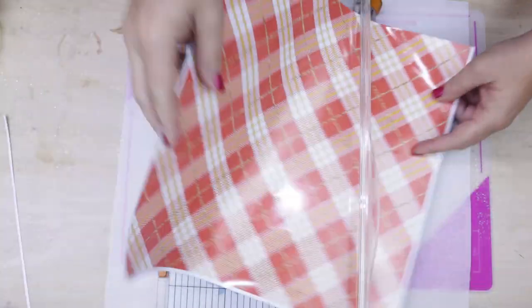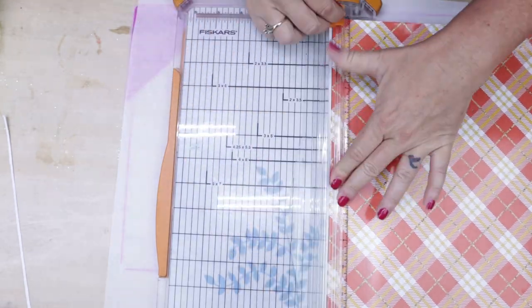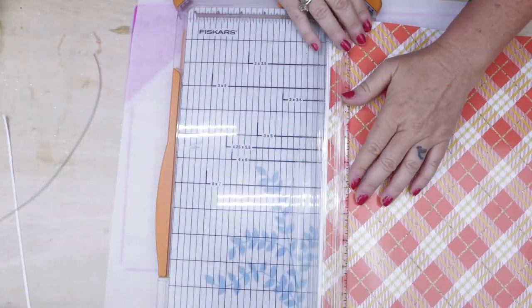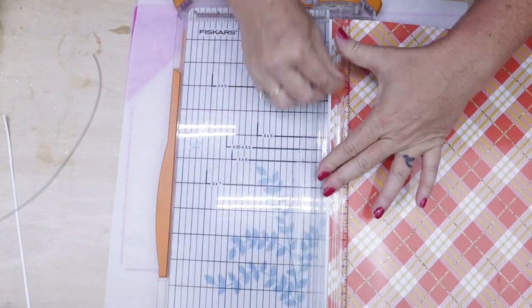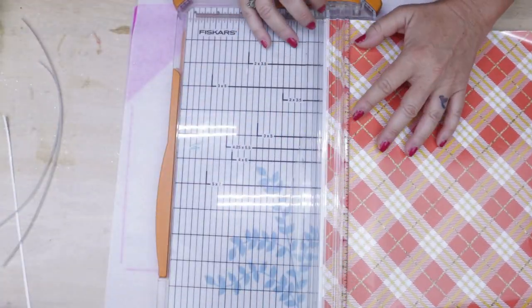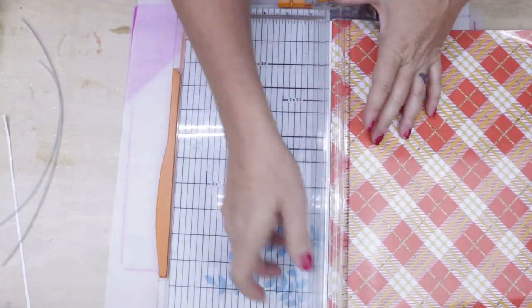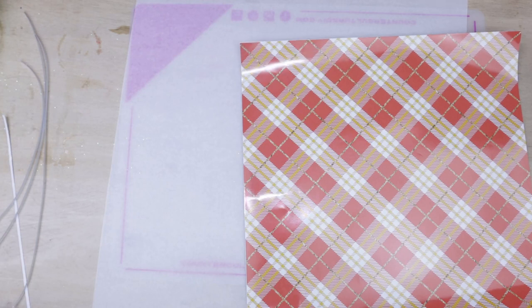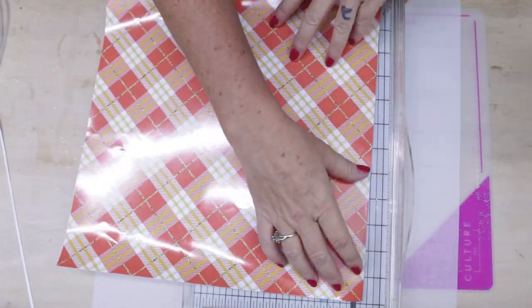We're gonna start off by cutting off those little white edges on all 12 by 12 sheets. When I've removed all of the white edges, I decided to cut four pieces of approximately two inches in width.